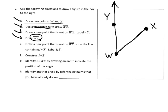Now draw a new point that is not on the ray or on the line segment, and label it Z. So it can't be on ray WY and it can't be on line segment WX. Let's put it right here and call that Z.